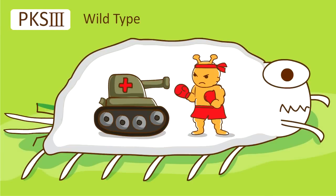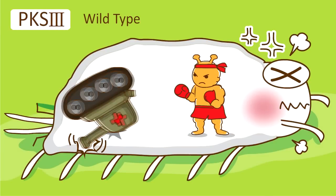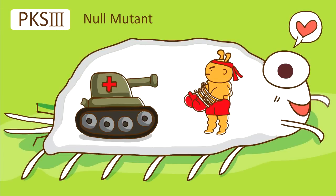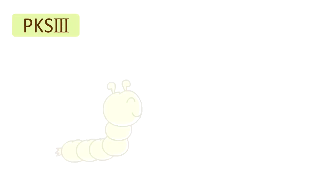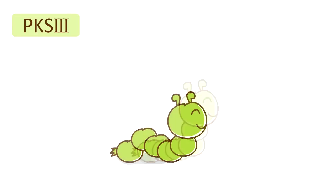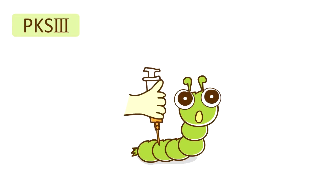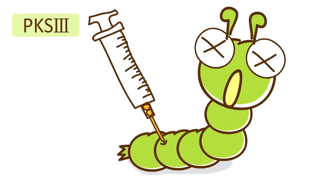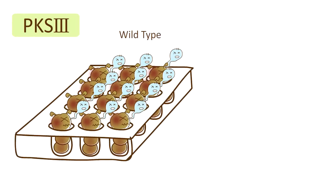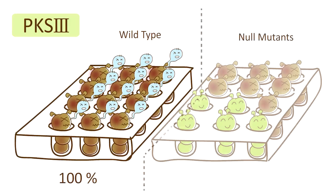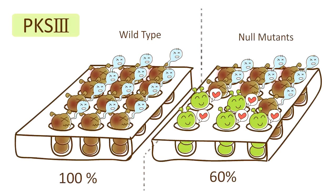Fungal PKS3 presumably acts to cope with the insect immune response. In the wild type, the fungus can overcome the insect defense and the infected insect dies. In the PKS3 null mutant, where this polyketide synthase is non-functional, the fungus cannot cope with the immune response and the insect remains healthy. Virulence assays showed that wild type injection resulted in 100% death, whereas the PKS3 null mutant spores caused only 60% mortality.